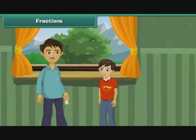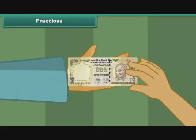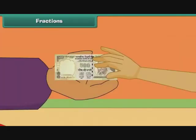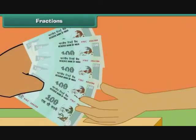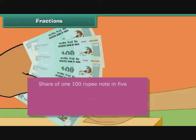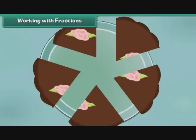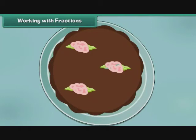Rishabh's father sends him to a nearby shop to get a five-hundred-rupee note exchanged for hundred-rupee notes. The shopkeeper accepts the five-hundred-rupee note and gives five hundred-rupee notes in return. Each hundred-rupee note is one out of five. Therefore, each hundred-rupee note constitutes one-fifth of five hundred rupees.